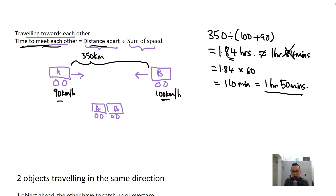So the answer is: if one car travels at 100 km/h and the other at 90 km/h with 350 km between them, they will meet each other in 1 hour and 50 minutes.